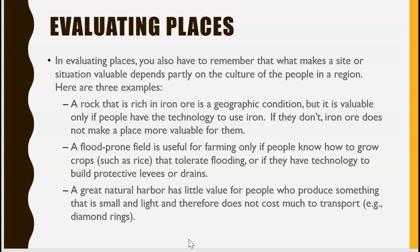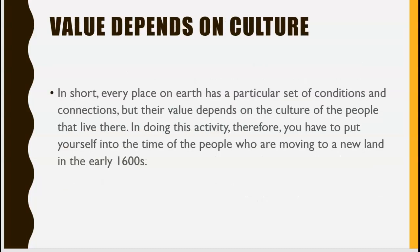A flood-prone field is useful for farming only if people know how to grow crops like rice that tolerate flooding, or if they have the technology to build protective levees or drains. A great natural harbor has very little value for people who produce something small and light that does not cost much to transport — like diamond rings, which don't necessarily need a harbor. In short, every place on earth has a particular set of conditions and connections, but their value depends on the culture of the people that live there.